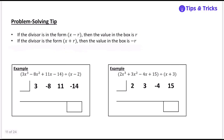Here are some problem-solving tips. If the divisor is in the form x minus r, the value in the box will be r — a positive number — so it's the opposite sign of what you see. If it's in the form x plus r, then the value in the box will be negative r. For example, with divisor x minus 2, the box value is positive 2; with divisor x plus 3, the box value is negative 3.